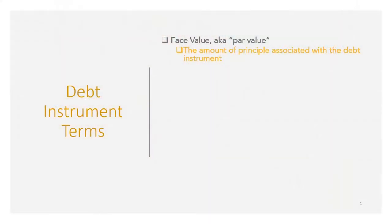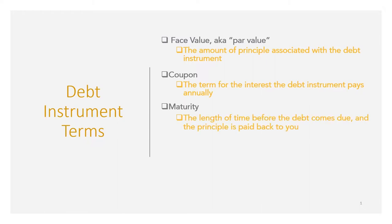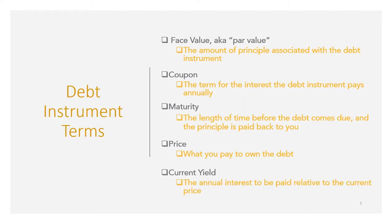Let's start with some basic definitions. There are plenty of terms in the world of debt investing that you'll hear in the financial press, but we really only care about five. Number one: face value, aka par value — that's the amount of principal associated with the bond. Par is from the Latin meaning equal or equal value. Number two: coupon — the term for the interest paid annually. Maturity — the length of time before the bond comes due and principal is paid back; maturity decreases as time passes. Number four: price — that's what you pay out to own the debt. And five: current yield — that's the annual interest relative to the current price.